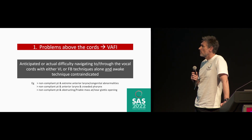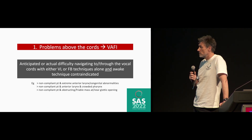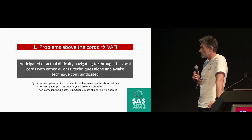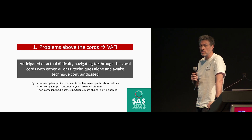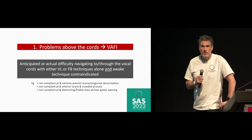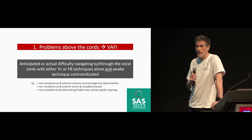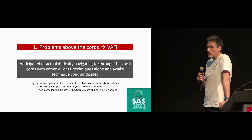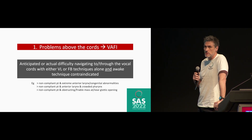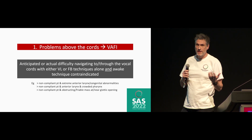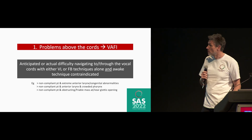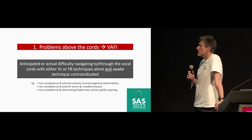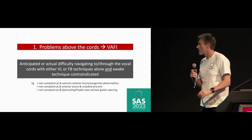Some examples where we might use the VAFI technique: a non-compliant patient with an extreme anterior larynx or congenital abnormalities where even with a video laryngoscope we're expecting not to get a view of the cords. Similarly, a non-compliant patient with an anterior larynx and a crowded pharynx — where you get the view with the hyperangulated blade and then lose it when introducing the tube. This is where you'd use the flexible bronchoscope as a steerable bougie, or where you have an obstructing or friable mass at or near the glottic opening.